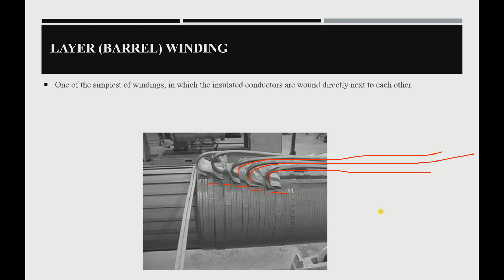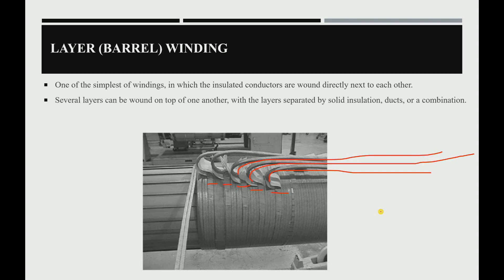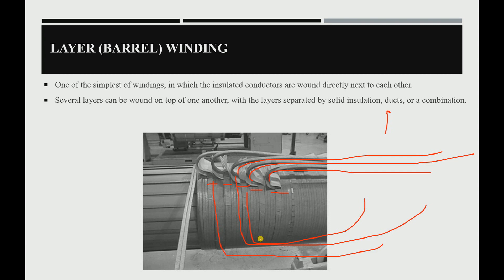The layer winding is one of the simplest winding types, in which insulated conductors are wound directly next to each other. Several layers can be wound on top of one another, separated by solid insulation, ducts, or a combination of both. In oil transformers, ducts allow oil to flow through the windings, helping to cool them down since the windings generate a high amount of heat.